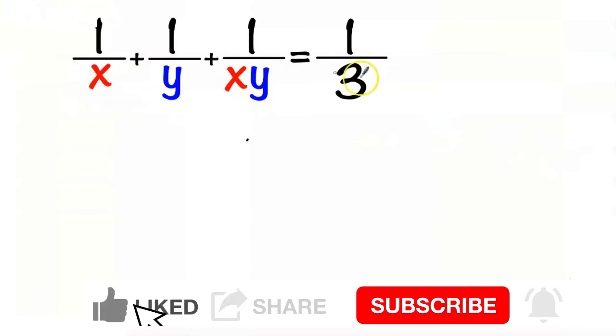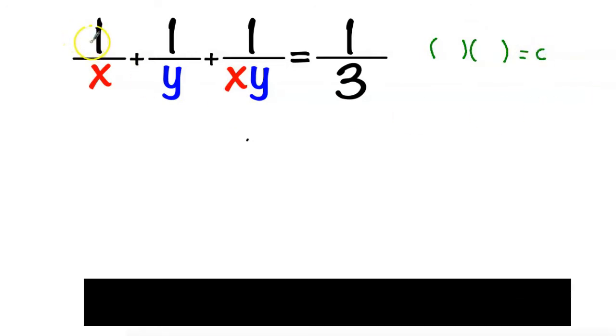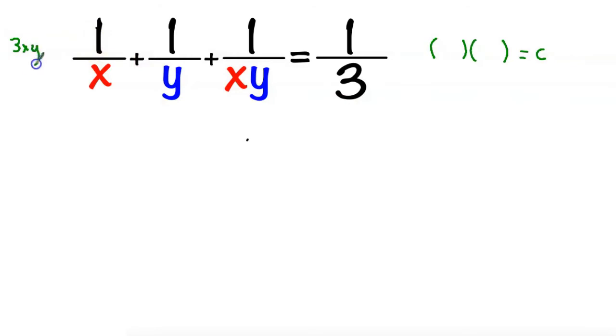So first we need to change this equation to the form two parentheses equal to a constant c. To do that we will multiply this equation by 3xy on both sides. So we will get 3xy over x plus 3xy over y plus 3xy over xy equal to 3xy over 3.